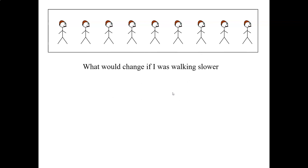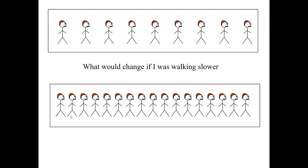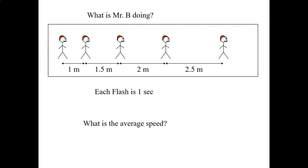How would my picture change if I was walking slower? Would the spacing get further or closer together? It would get closer together, because each time the light flashes, I don't go quite as far as in the upper picture. So closer spacing means you're walking slower. Here, the flash is every one second, and the spacing is getting further apart — assuming he's walking to the right — so he's speeding up because the spacing is getting further apart.